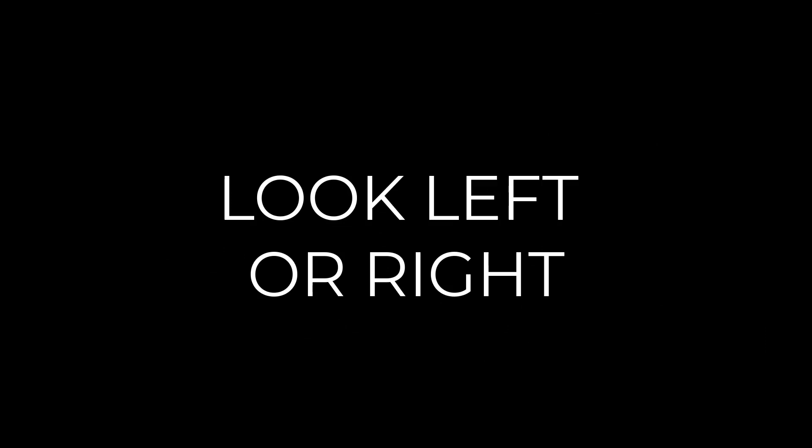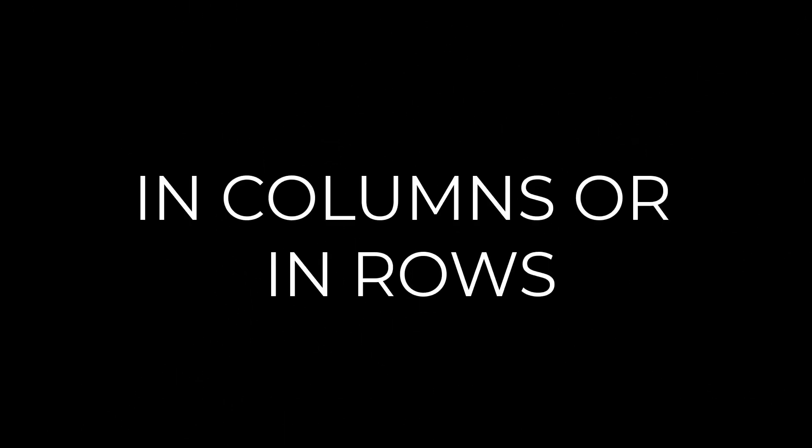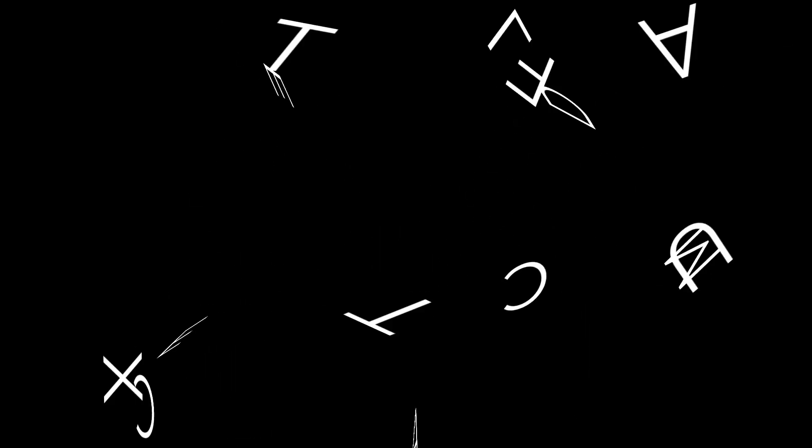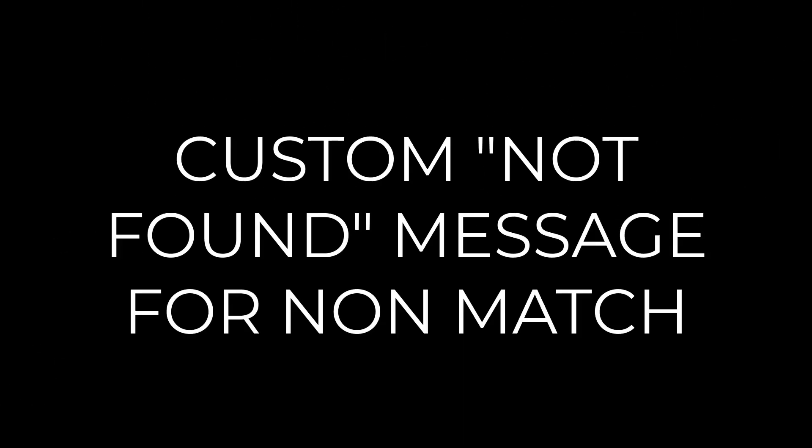You can look to the left or the right. You can look in columns or in rows. You can look for an exact match, or you can look for data with a wildcard. You can look for the first instance of data or the last. By default, XLOOKUP uses an exact match, so you no longer have to enter that argument like you did for VLOOKUP. You can enter custom data for any text that is not found, and you can return more than one column of data.